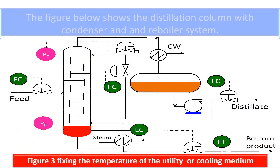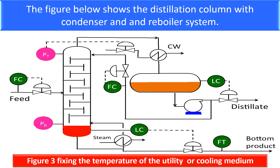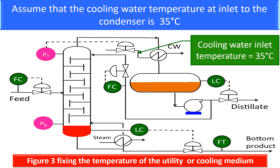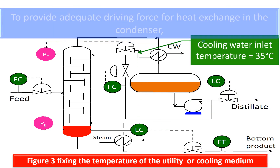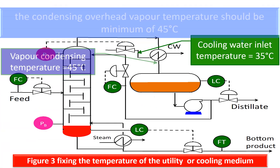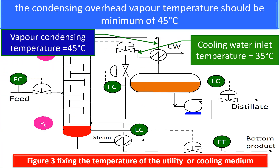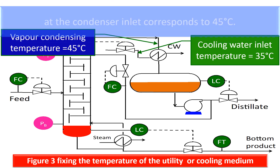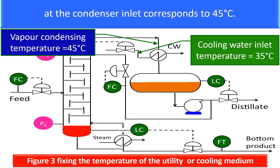The figure below shows the distillation column with condenser and re-boiler system. Assume that the cooling water temperature at the inlet to the condenser is 35 degrees centigrade. To provide adequate driving force for heat exchange in the condenser, the condensing overhead vapor temperature should be a minimum of 45 degrees centigrade. You have to vary the column top pressure such that the saturation vapor pressure at the condenser inlet corresponds to 45 degrees centigrade.